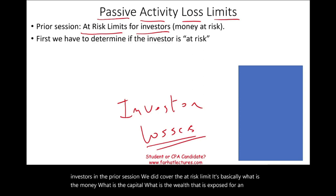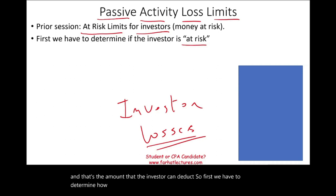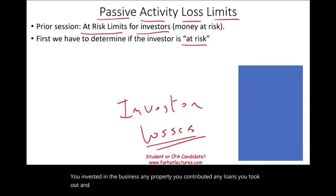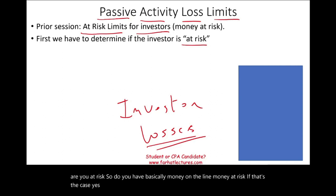First we have to determine how much are you at risk. We did determine this in the prior session — basically what cash you invested in the business, any property you contributed, any loans you took out and you're personally liable, so on and so forth. First we have to determine, are you at risk? Do you have money on the line, money at risk? If that's the case, you might have losses that you can deduct.